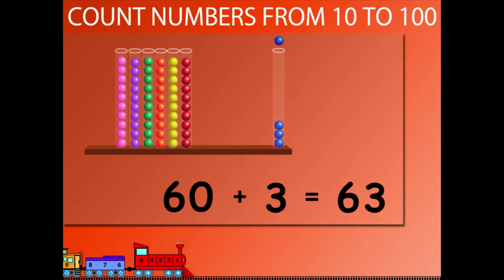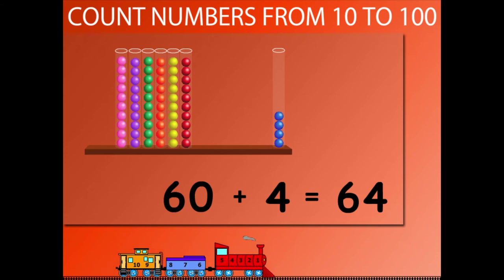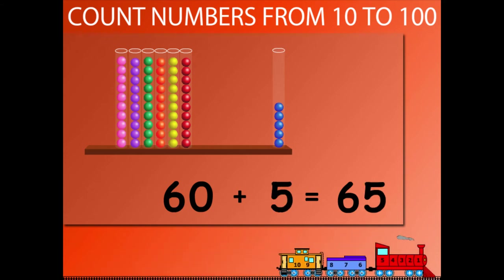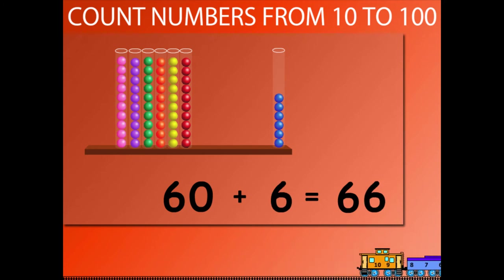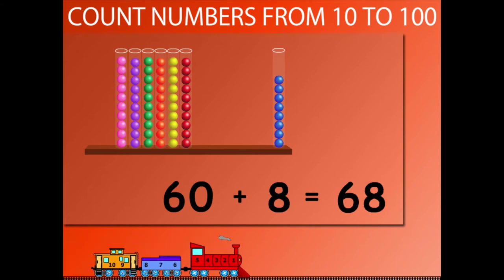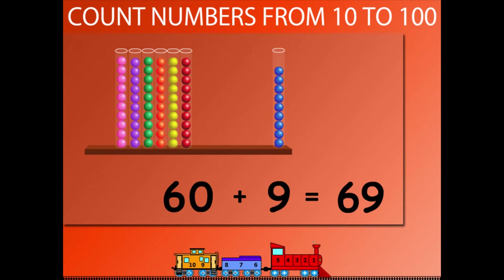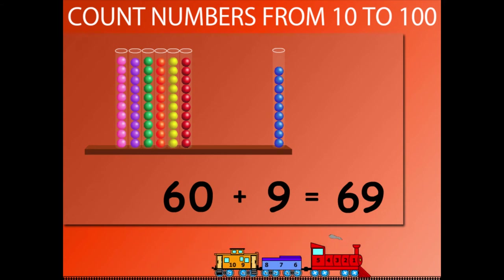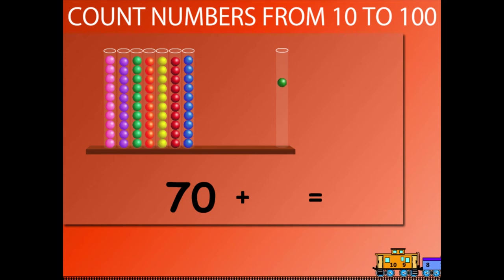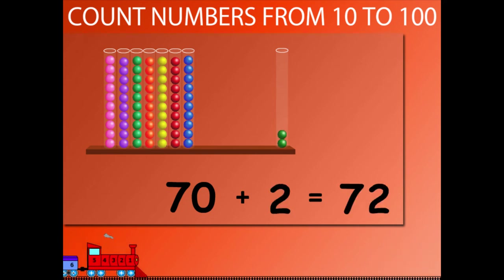60 plus 4 is equal to 64. 60 plus 5 is equal to 65. 60 plus 6 is equal to 66. 60 plus 7 is equal to 67. 60 plus 8 is equal to 68. 60 plus 9 is equal to 69. 60 plus 10 is equal to 70. 70 plus 1 is equal to 71.